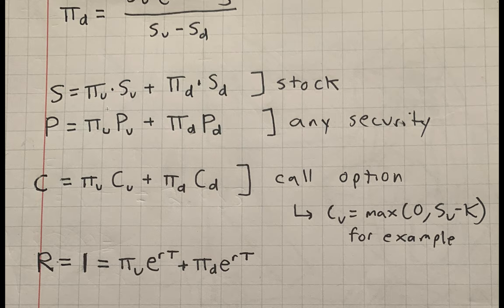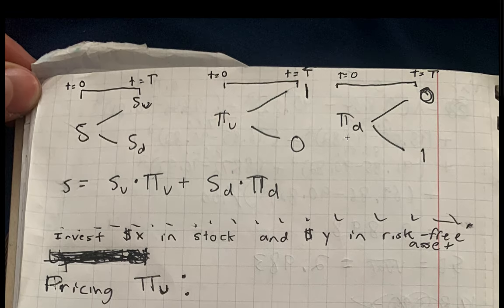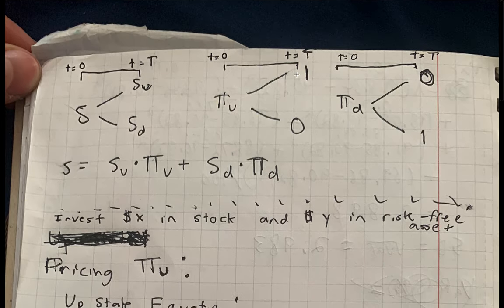We saw this example with the stock, but really for any security you can do the same thing, since any payoff is just a combination of values in the up state and the down state. So you can use combinations of arrow securities to replicate and price any security.